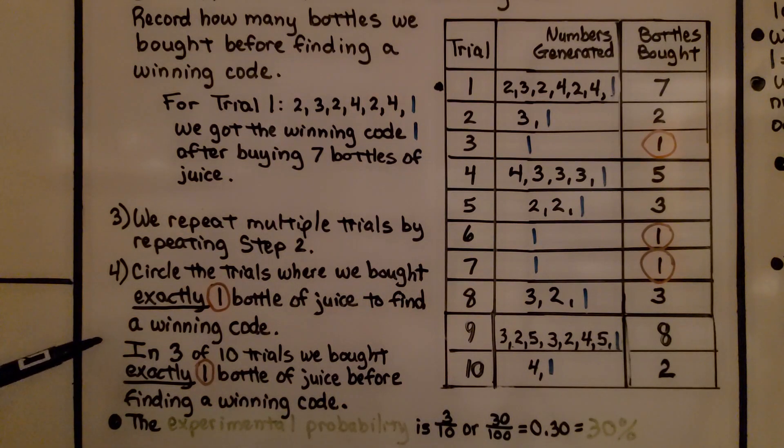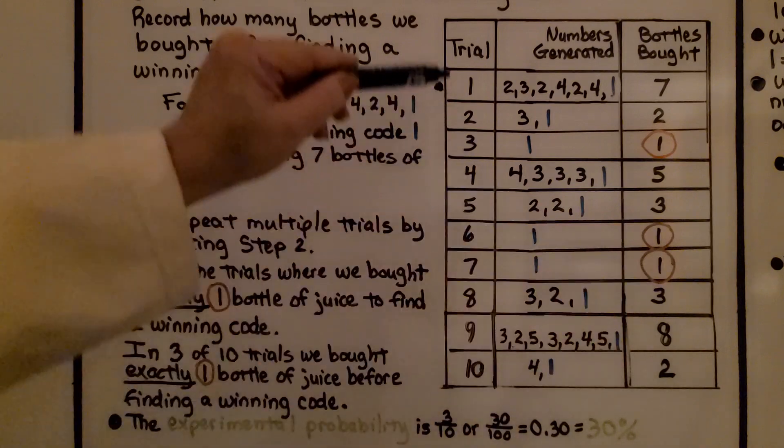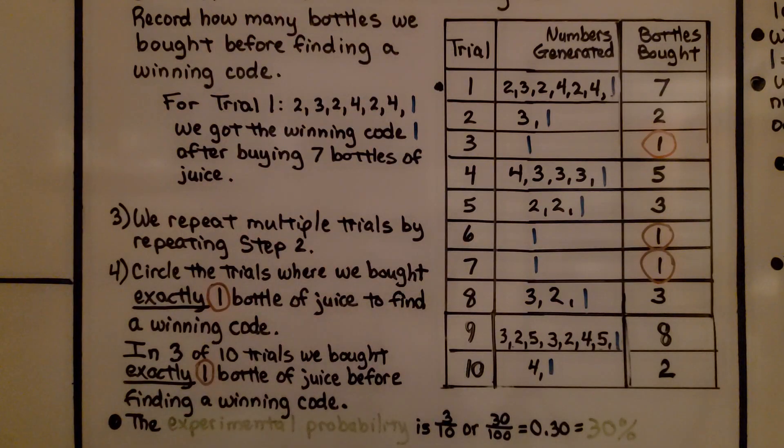In 3 of 10 trials, we bought exactly 1 bottle of juice before finding a winning code. The experimental probability is 3 tenths, or 30 hundredths, which is 0.30 as a decimal, which is equal to 30%.